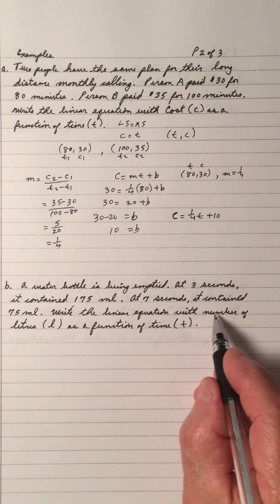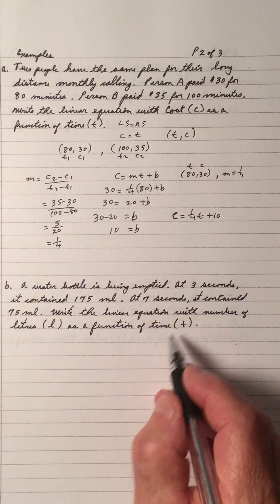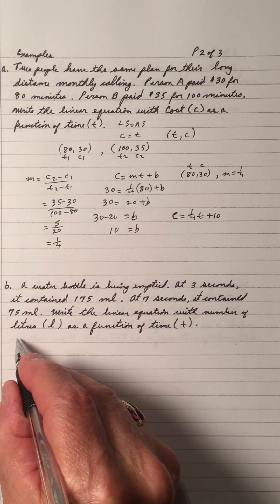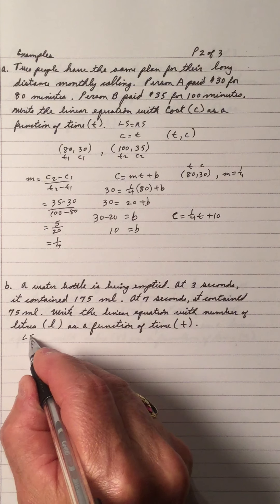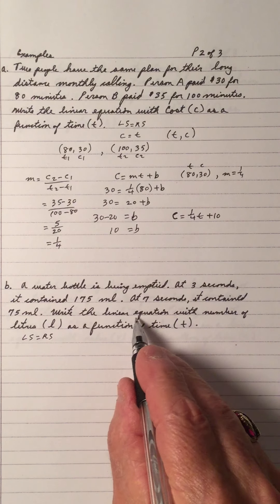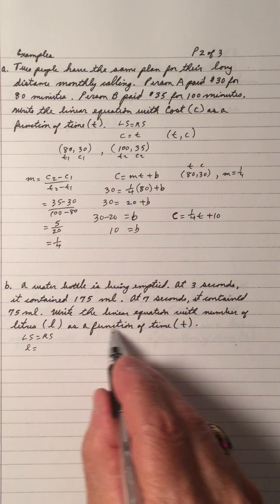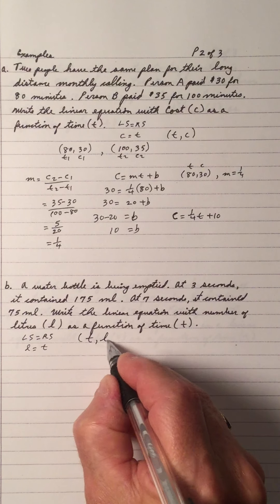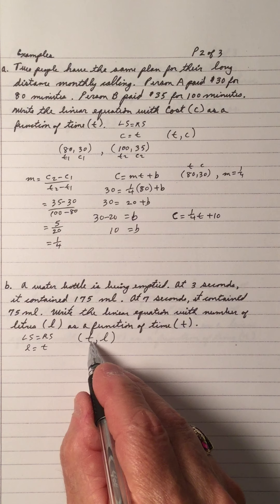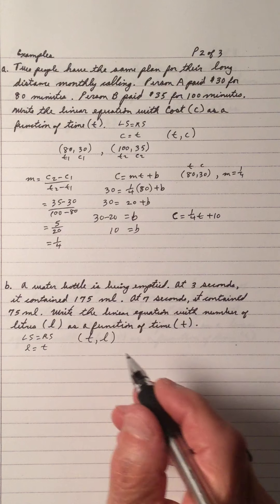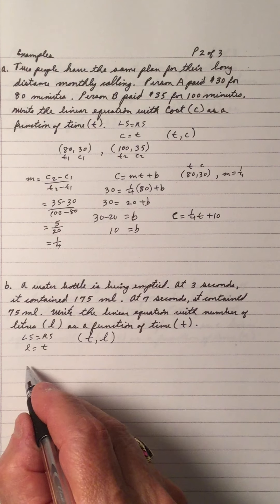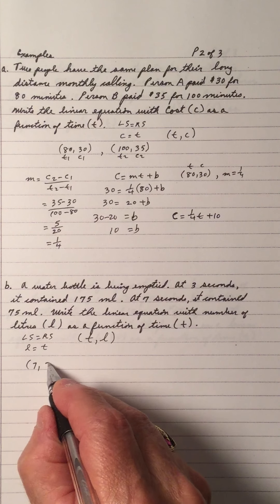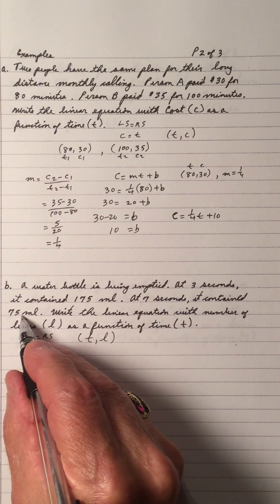Write a linear equation with the number of liters L as a function of time. So again, we have a left side and a right side. The left side is the number of liters L as a function of the time t. That means my ordered pair is time giving you the liters — the independent variable and the dependent variable. At 7 seconds it contains 75 liters.